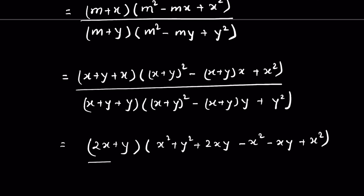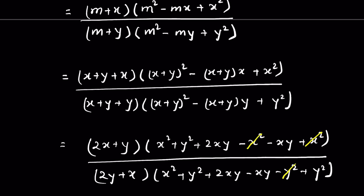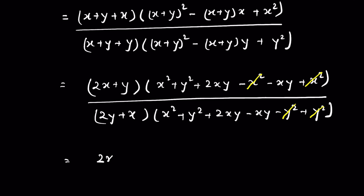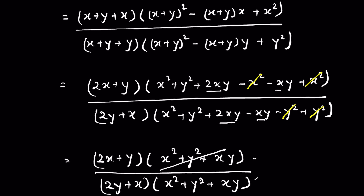Expanding: the numerator bracket gives x² + y² + 2xy − x² − xy = xy. The denominator bracket gives x² + y² + 2xy − xy − y² + y² = xy. The x² terms and y² terms cancel, leaving xy in both brackets. Since the bracket expressions are equal, they cancel, leaving (2x + y) / (x + 2y).